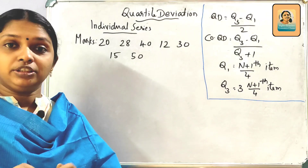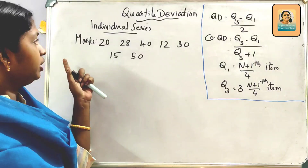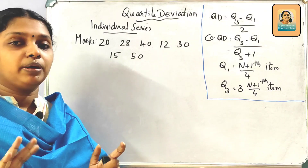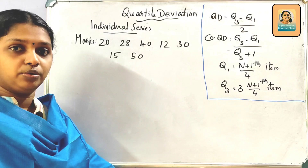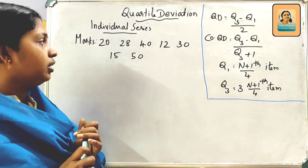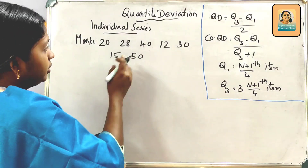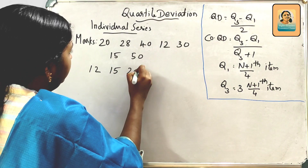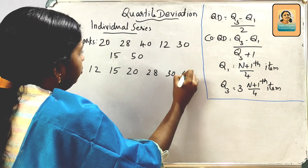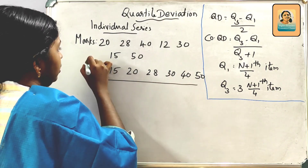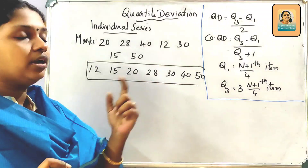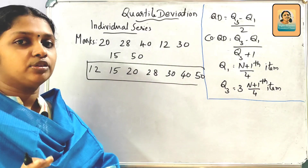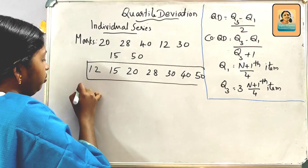The problem is in the first individual series. The individual series has marks. If we take the median, we arrange values as x values in ascending order. The values in ascending order are: 15, 20, 28, 30, 40, 50. This is the equation for Q1 and Q3, and we have a coefficient of quartile deviation.